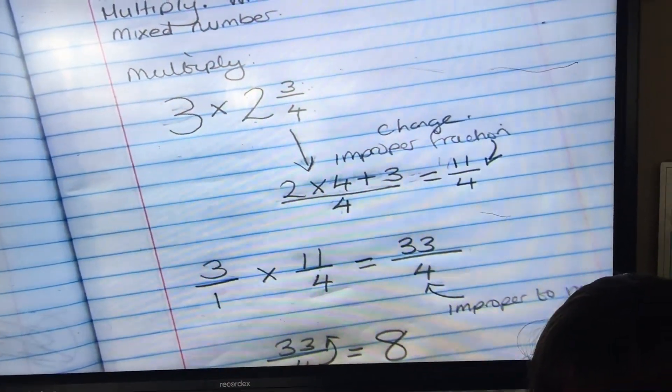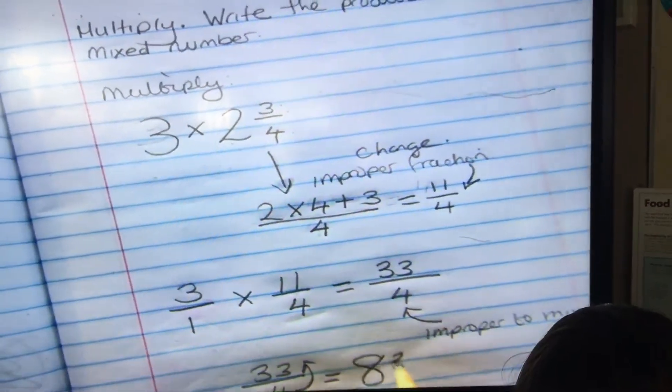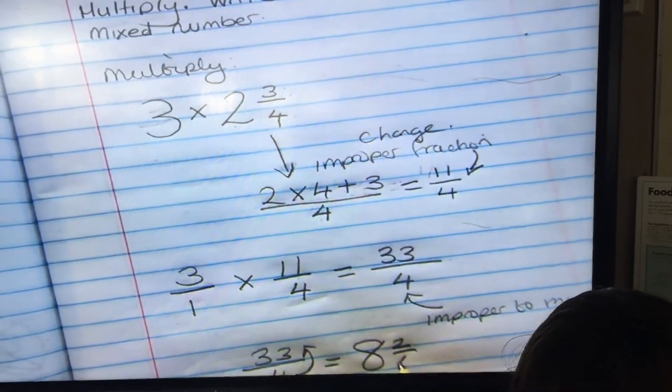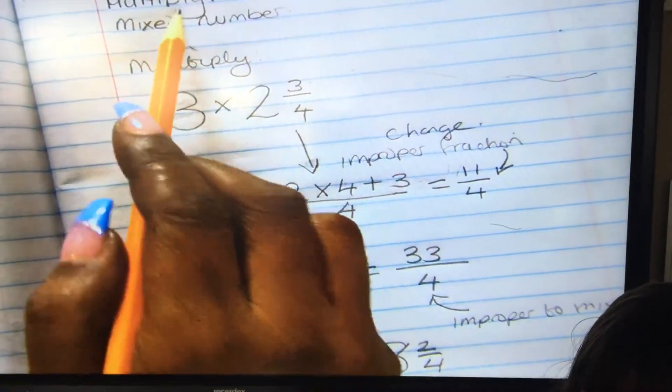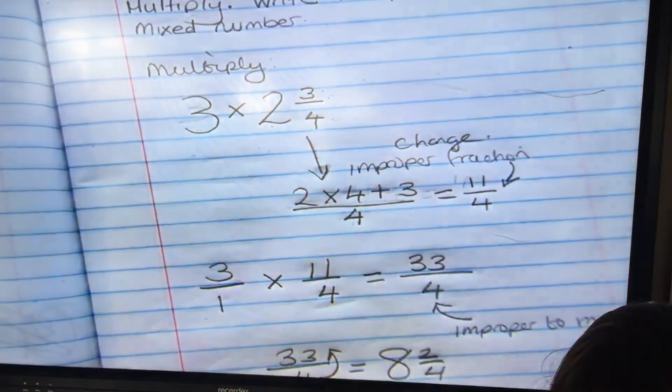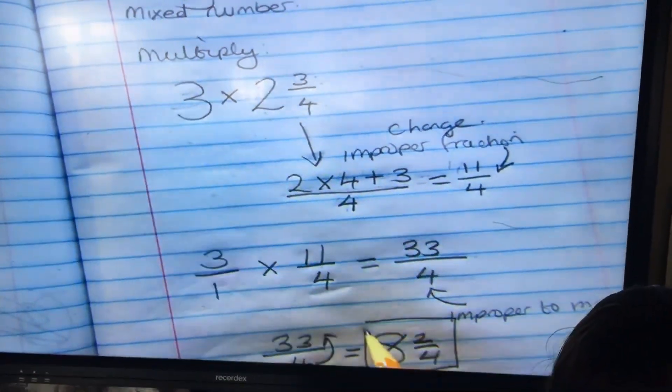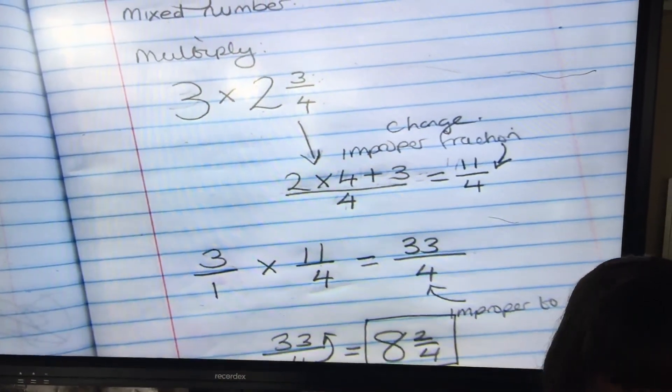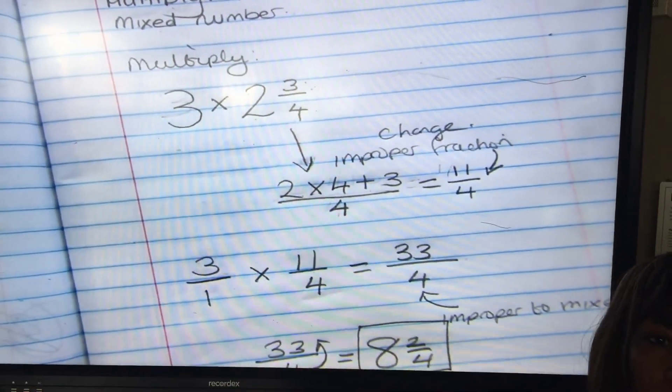One. And we put it over 4, very good. And that is how you multiply and write the product as a mixed number. And that is your final answer. This was to help you with your homework tonight. Thank you.